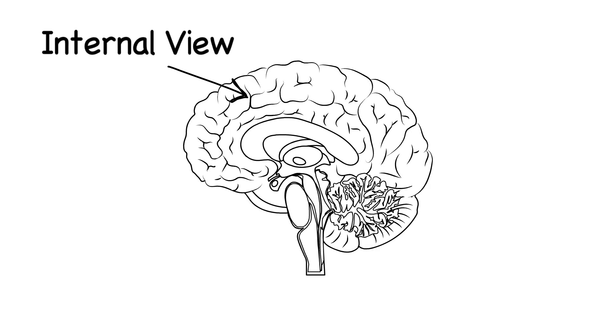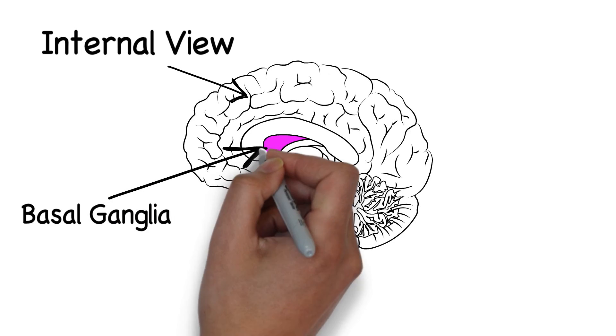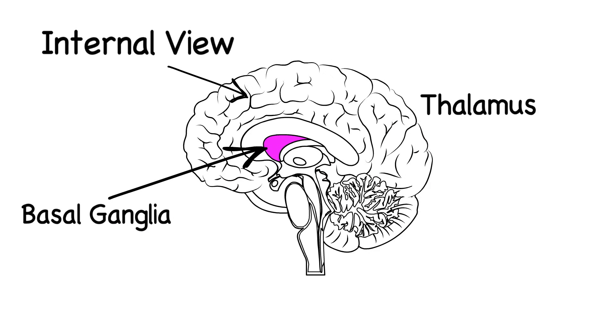Important to point out here are the basal ganglia, a group of structures located here. And the thalamus, a small structure located here just above the brain stem.